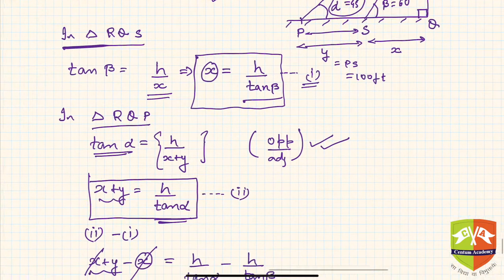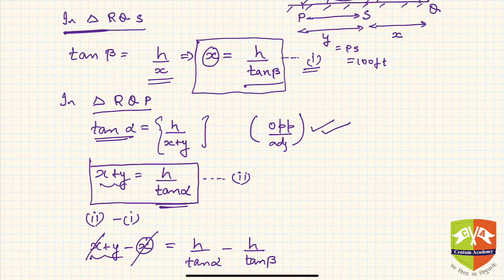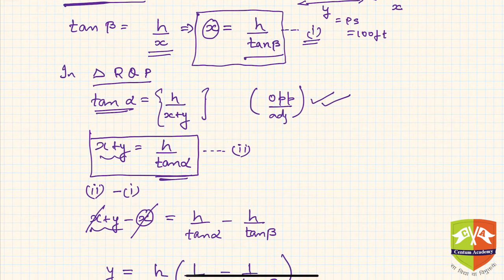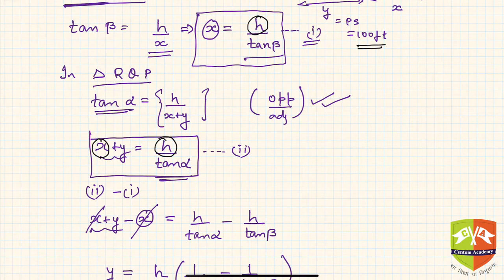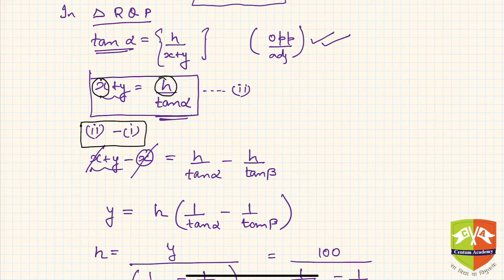Why are we doing it? Basically we want h, isn't it? So our objective is to find h. Always keep that in mind. x is unknown, so I will try to eliminate x. y is known because y is given as 100 feet. So we have to eliminate x. Hence I am trying to do something so that x can be eliminated. What do I do? I do this operation: equation 2 minus equation 1. Hence, x gets eliminated because of that subtraction.